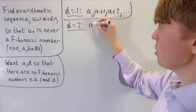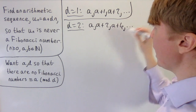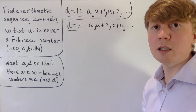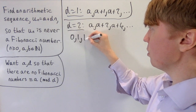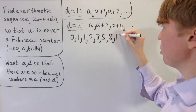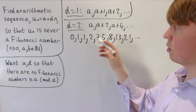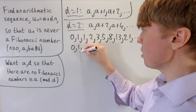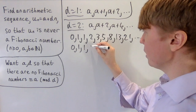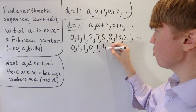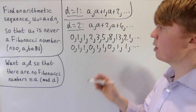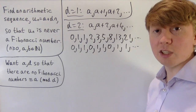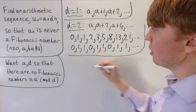For d equals 2, our sequence would be all even numbers or all odd numbers. Looking at the Fibonacci numbers — 0, 1, 1, 2, 3, 5, 8, 13, 21 — the pattern of parities is even, odd, odd, repeating. Considering the Fibonacci numbers modulo 2: 0, 1, 1, then 1 plus 1 becomes 0, then 1, 0, 1, and it repeats 0, 1, 1. So the Fibonacci numbers contain infinitely many evens and infinitely many odds, meaning d equals 2 won't work either.